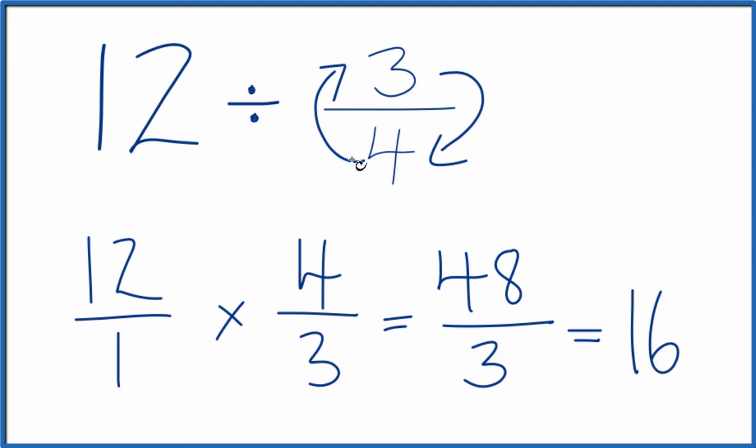So in answer to our question, when we divide 12 by 3 fourths, we get 16. And if you take 16 and multiply it by 3 fourths, you'll end up with 12. This is Dr. B. Thanks for watching.